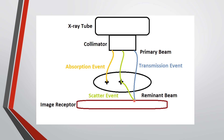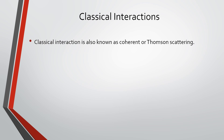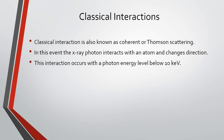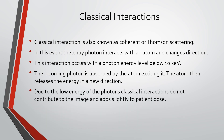There are five ways that these interactions can occur. The first type is called classical interaction, also known as coherent or Thompson — J.J. Thompson discovered the phenomenon. In this event, the x-ray photon interacts with an atom and changes direction. The interaction occurs with photon energies typically below 10 keV. The incoming photon is absorbed by the atom, exciting it, and the atom then releases the energy in a new direction. Due to the low energy of the photons, classical interactions do not contribute to the image and add slightly to the patient dose.